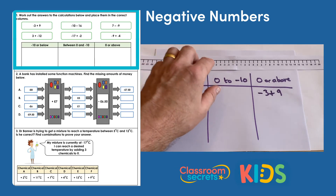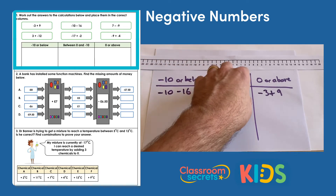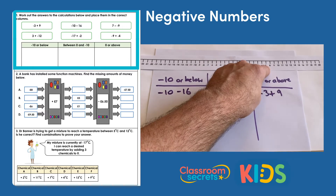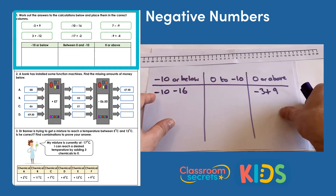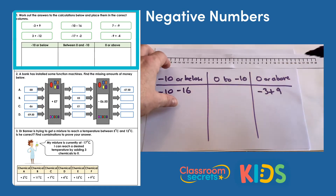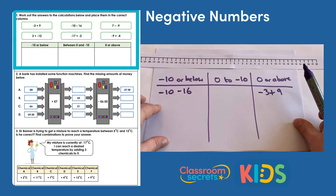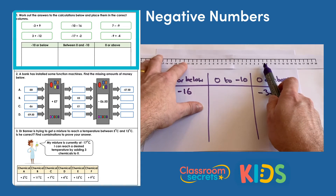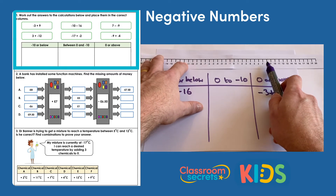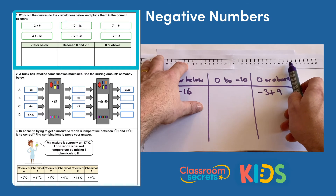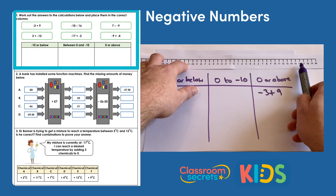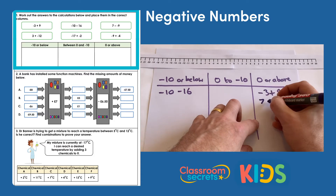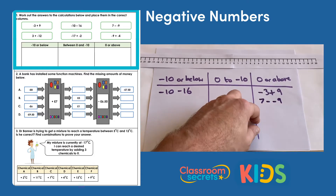The next calculation is 7 take away negative 9. We are taking away a negative value which means we're actually going to do an addition. Starting at 7 and adding 9 brings us to 16. So 7 take away negative 9 goes in the zero or above column.